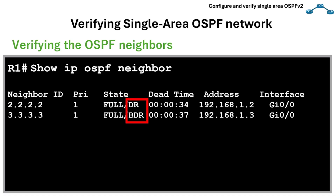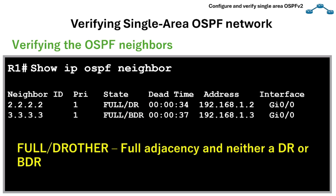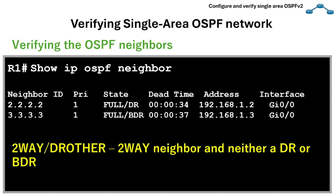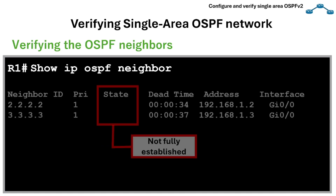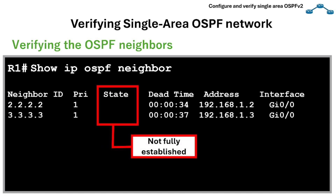DR and BDR are designated router and backup designated router respectively. Another state can be Full/DR Other, which means full adjacency but neither a DR nor BDR. There is also the Two-Way/DR Other state, which is a two-way neighbor relationship that is neither a DR nor BDR. So if you don't see neighbors in the full state, OSPF adjacency is not fully established.